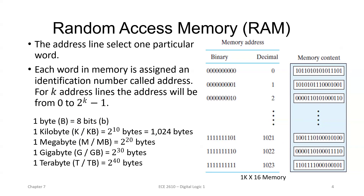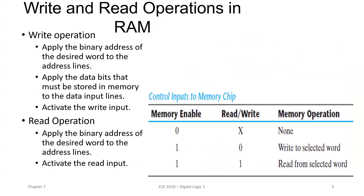These are the various ways of representing memory size. For the read and write operations in RAM: the write operation applies the binary address of the desired word to the address lines. When activating the write input, it selects the word. When the read input is selected, the memory enable should always be 1 and it will read the data from the word.